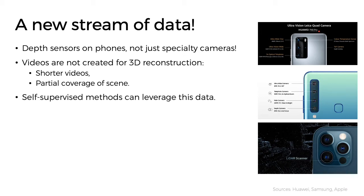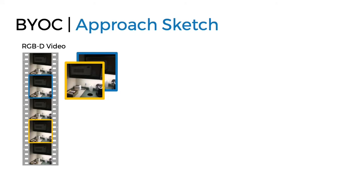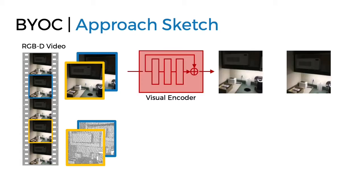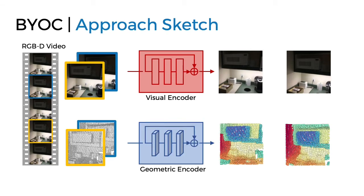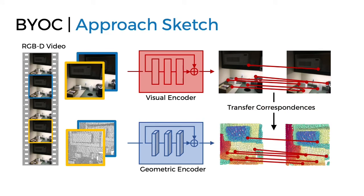Self-supervised approaches that learn directly from video can better leverage this data. To this end, we propose a method that learns directly from the RGBD video. At a high level, our approach is fairly simple. Given an RGBD video, we first sample two frames. By sampling close-by frames, we expect them to capture similar parts of the scene. We then represent those frames as RGBD images or point clouds. We use a visual encoder to extract visual features from the images and a geometric encoder to extract geometric features from the point clouds. We can then sample point correspondences using the visual features and use them to train the geometric encoder, allowing us to train the model without requiring any supervision.